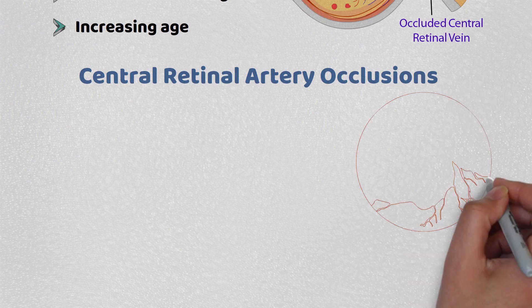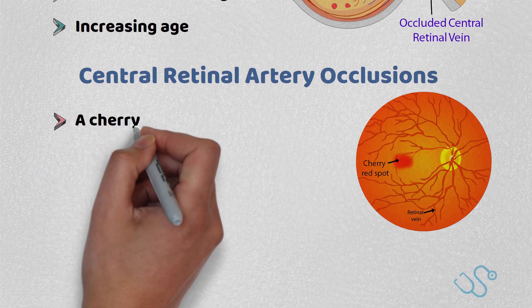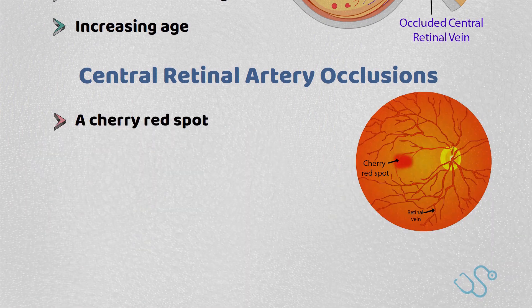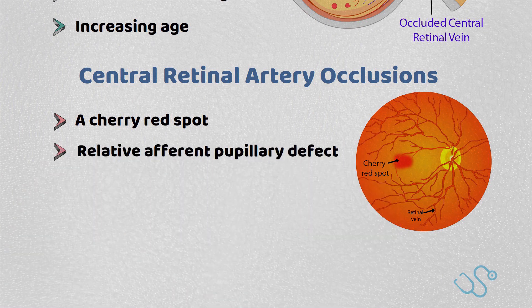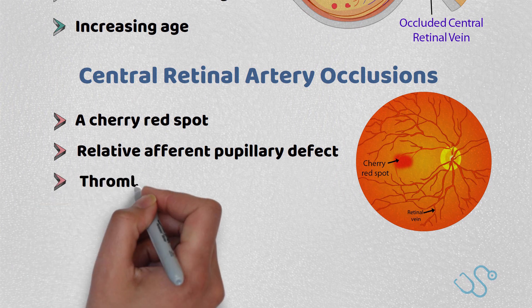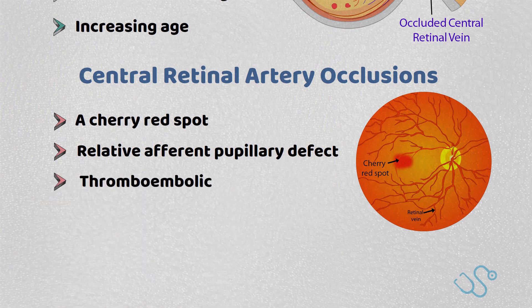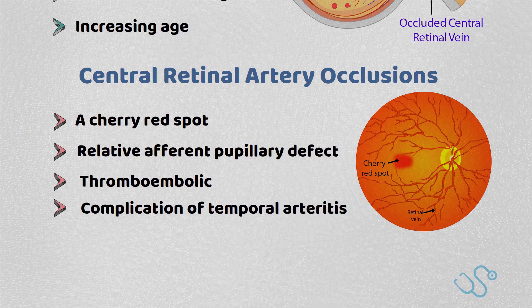Central retinal artery occlusion classically presents as a cherry red spot on fundoscopic examination, and this is a common exam feature. Patients often present with a relative afferent pupillary defect, with the most common etiology being thromboembolic in nature. However, this can also be seen as a complication of temporal arteritis, and those patients often need an urgent eye review.